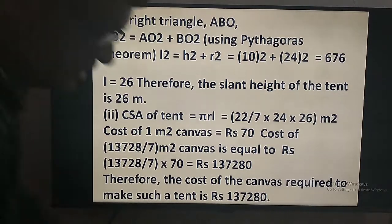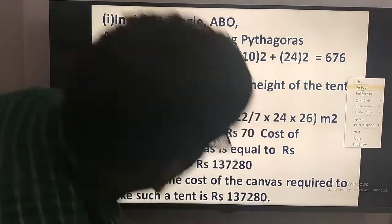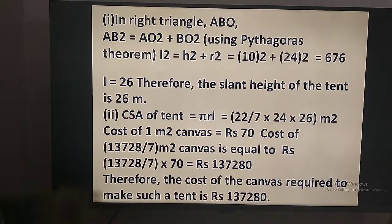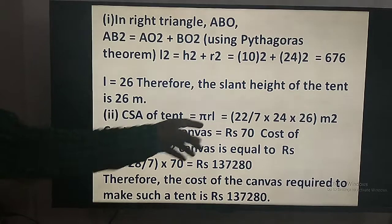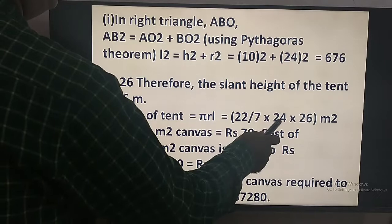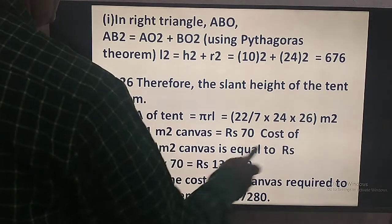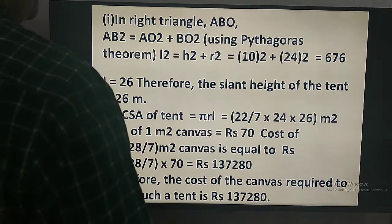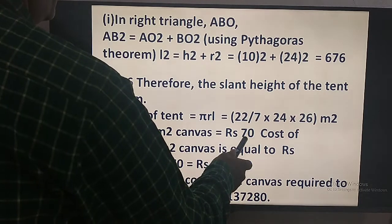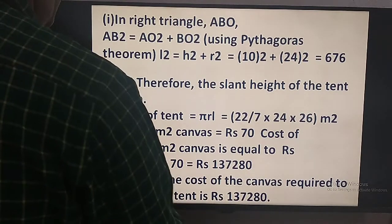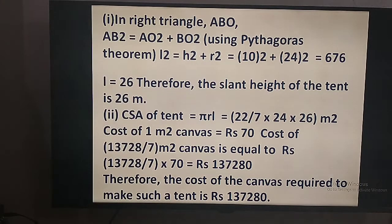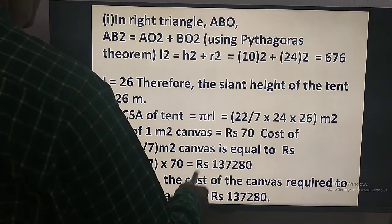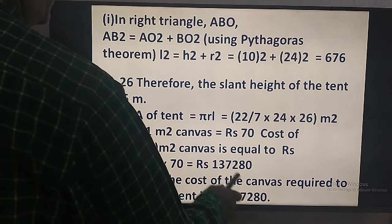Now canvas required equals the curved surface area of the cone, which is pi R L. Pi is 22 by 7, radius is 24 m, and L is 26 m. Multiplying gives the canvas area. The rate of canvas is 70 rupees per square meter, so we multiply the area by 70. This gives the cost of canvas as 1,37,280 rupees.